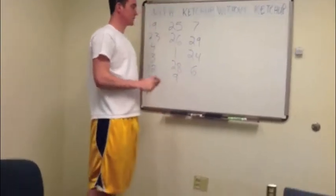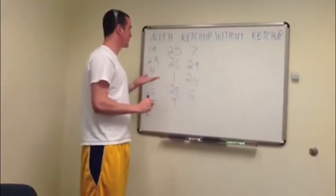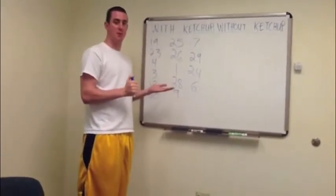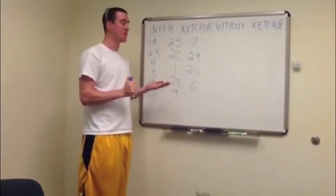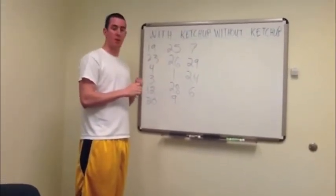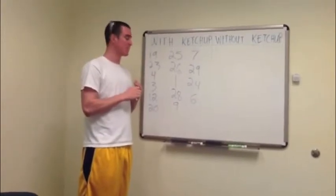So here we have the numbers that we're going to eat with ketchup after we did our simple random sampling by putting all the numbers into a random sampler.